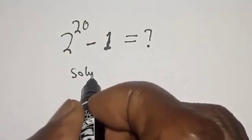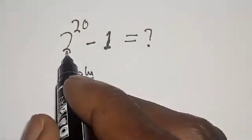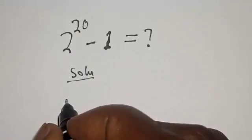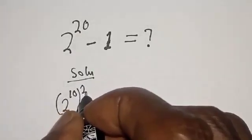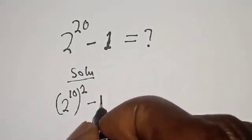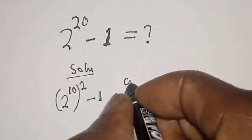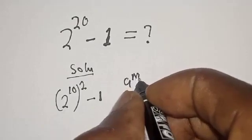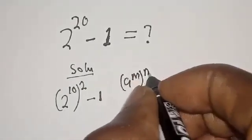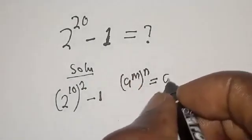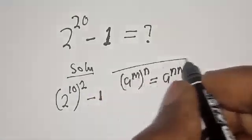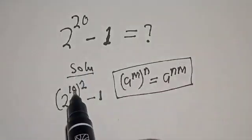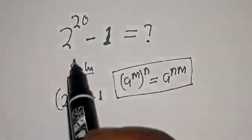Solution: 2^20 can be written as (2^10)^2 - 1. Remember that (a^m)^n = a^(mn). If you multiply 10 by 2, you get 2^20 back.